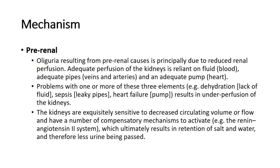For its mechanism, oliguria resulting from pre-renal causes is principally due to reduced renal perfusion. Adequate perfusion of the kidneys is reliant on fluid like blood, adequate pipes like veins and arteries, and an adequate pump, which is the heart. Problems with one or more of these three elements, such as dehydration, sepsis, or heart failure, results in under-perfusion of the kidneys. The kidneys are exquisitely sensitive to decreased circulating volume or flow, and have a number of compensatory mechanisms to activate, such as the renin-angiotensin 2 system, which ultimately results in retention of salt and water, and therefore less urine being passed.